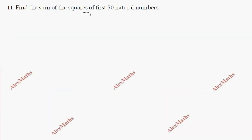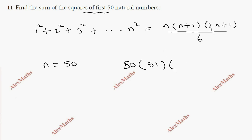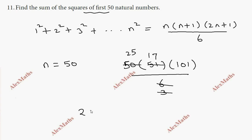Question number eleven: find the sum of squares of the first 50 natural numbers. Using the formula 1² + 2² + 3² + ... + n² = n(n+1)(2n+1)/6. Substituting n = 50: S = 50 × 51 × 101 / 6 = 25 × 17 × 101 = 42925.